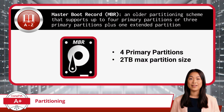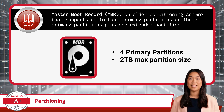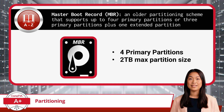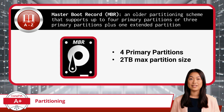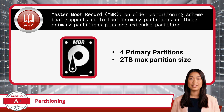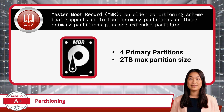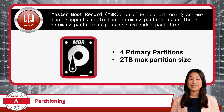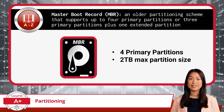Master Boot Record, or MBR, is the older of the two partitioning schemes and has been around since the early days of personal computing. An MBR partitioning scheme supports up to four primary partitions, or three primary partitions plus one extended partition, which can contain multiple logical drives. A primary partition is a bootable partition that can contain an operating system, while an extended partition is a non-bootable partition, usually used for additional data storage. Each partition can be up to two terabytes in size. MBR is suitable for older systems or those still running legacy software that doesn't support GPT. It's also a straightforward choice if you don't need more than four partitions or require partitions larger than two terabytes.